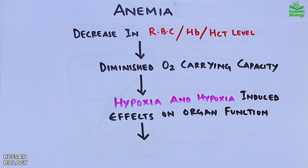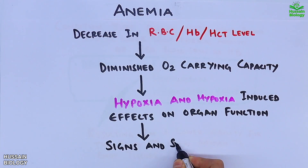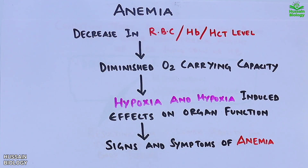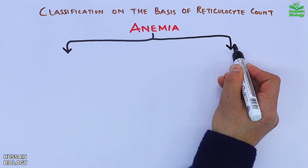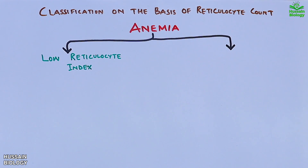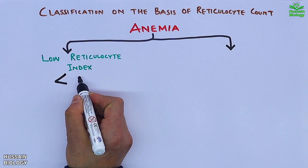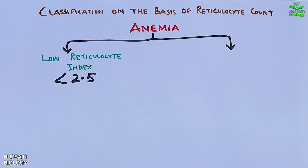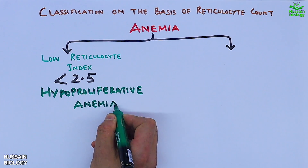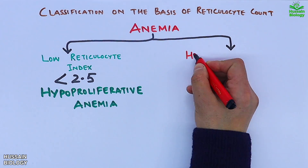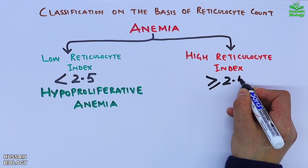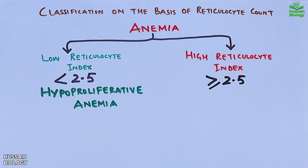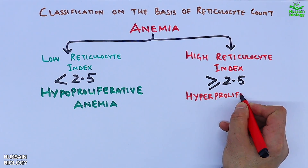These effects produce the signs and symptoms of anemia. The classification of anemia based on reticulocyte count includes: first, low reticulocyte index — an index less than 2.5 — termed hypoproliferative anemia; and second, high reticulocyte index — greater than or equal to 2.5 — termed hyperproliferative anemia.